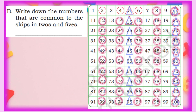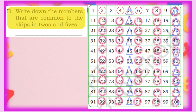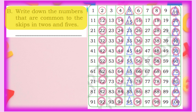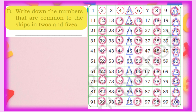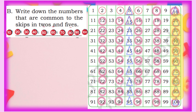Now the next question says: write down the numbers that are common to the skips in 2s and 5s. We drew circles for 2s and triangles for 5s. Now we need to find numbers that have both a circle and a triangle — that is, numbers appearing in both sequences. Those are 10, 20, 30, 40, 50, 60, 70, 80, 90, and 100. All other numbers have either a circle or a triangle, but not both.